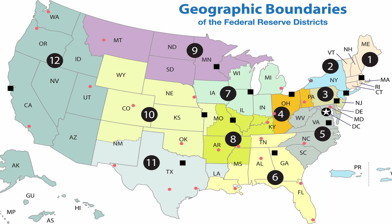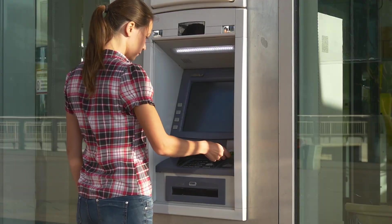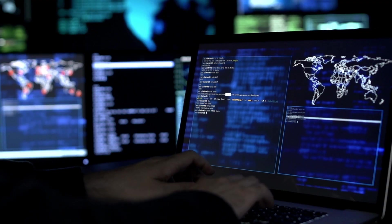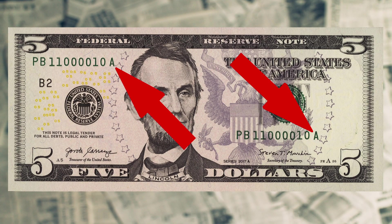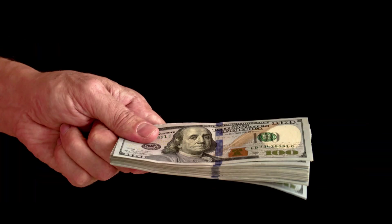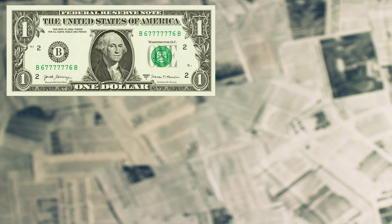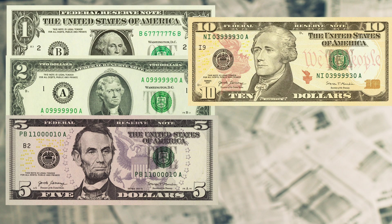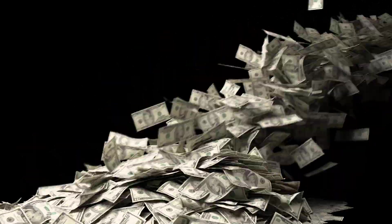These 12 Federal Reserve Banks are in charge of servicing the entire country with cash. All smaller and regional banks that have an account with the Federal Reserve can order money from the Reserve Bank that services their area. The suffix letter represents the run, or how many times the Federal Reserve Bank has asked for money. For denominations $1, $2, $5, $10, and $20, 96 million notes are printed per run.